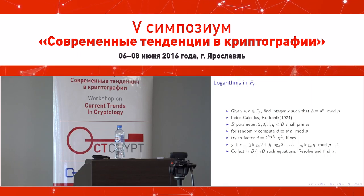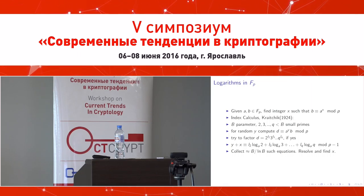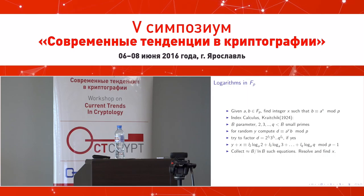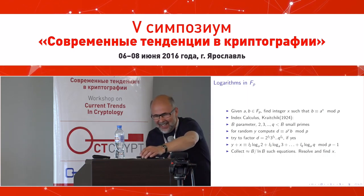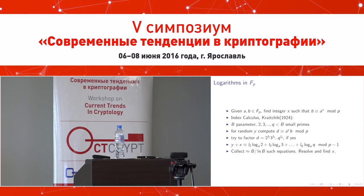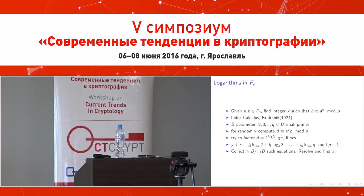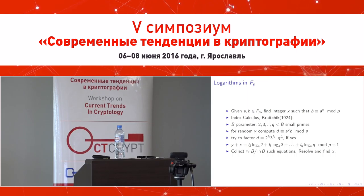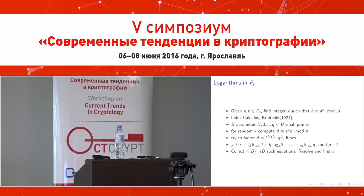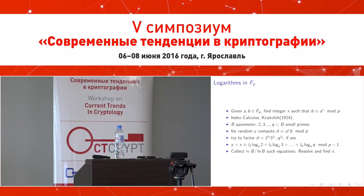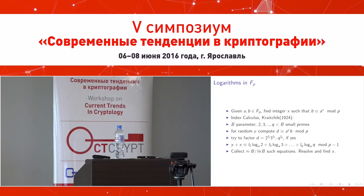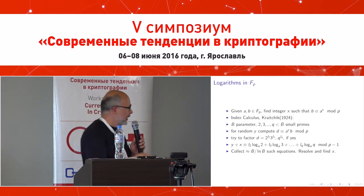This is one linear equation modulo p−1, but the number of variables is large, so we must collect many such equations — as many as the number of variables, which is about the number of prime numbers bounded by B. We collect the system and resolve it using Gaussian elimination. In particular, we find the unknown logarithms. This is the basic idea of the index calculus algorithm.